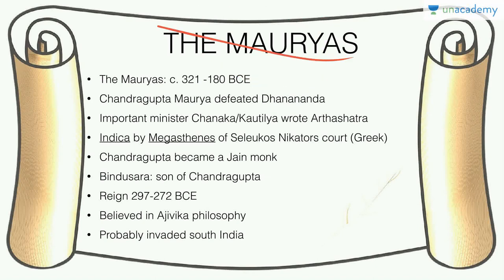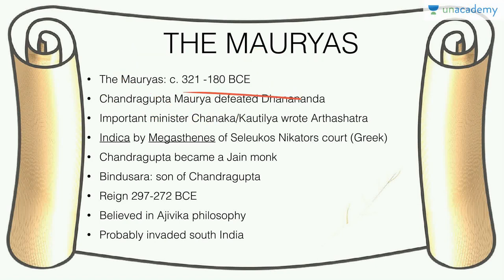The Mauryas were the next most important dynasty of Magadha. Don't confuse Magadha — the land/area — with Mauryas, which is the dynasty/empire. The Mauryas ruled from 321 to 180 BCE, about 150 years. Chandragupta Maurya defeated Dhanananda of the Nanda dynasty. He had a very important minister called Chanakya or Kautilya, who wrote the Arthashastra — a very important historical source. Another source is the Indica by Megasthenes, the diplomat of Seleucus Nicator, sent to Chandragupta Maurya's court.